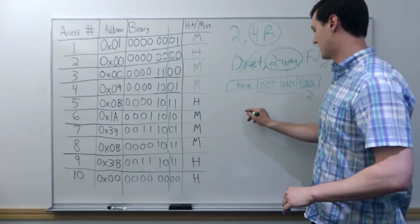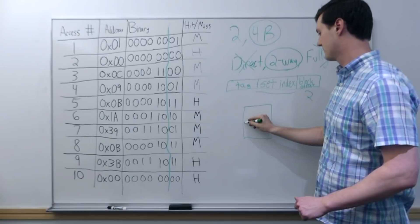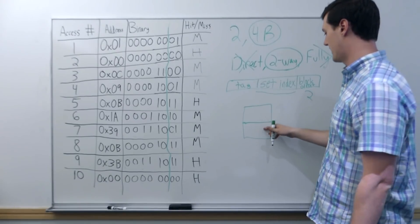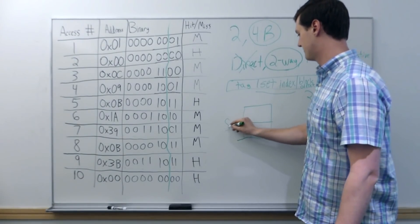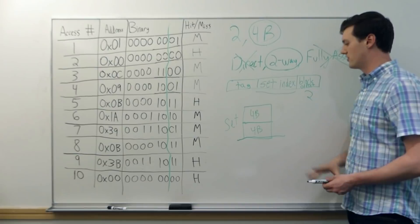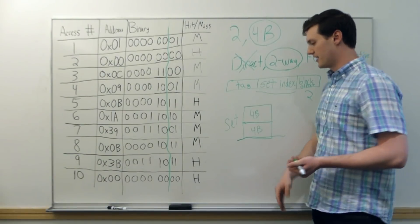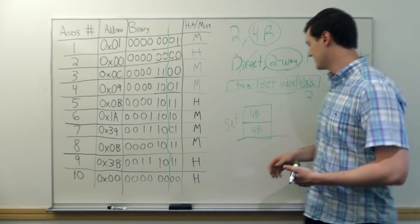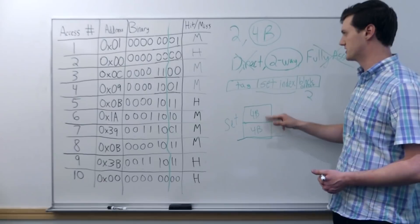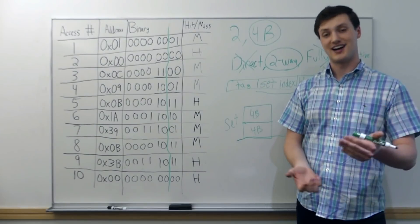Now we know we have a two-way set associative cache. For each set in the cache, there are two lines — two blocks per set. With a block size of four bytes, each set holds two blocks of four bytes each. The last part of the question asks for the total cache size, which comes down to figuring out how many sets we have. If we know the number of sets, we know the blocks per set and bytes per block, so we can deduce the total cache size.